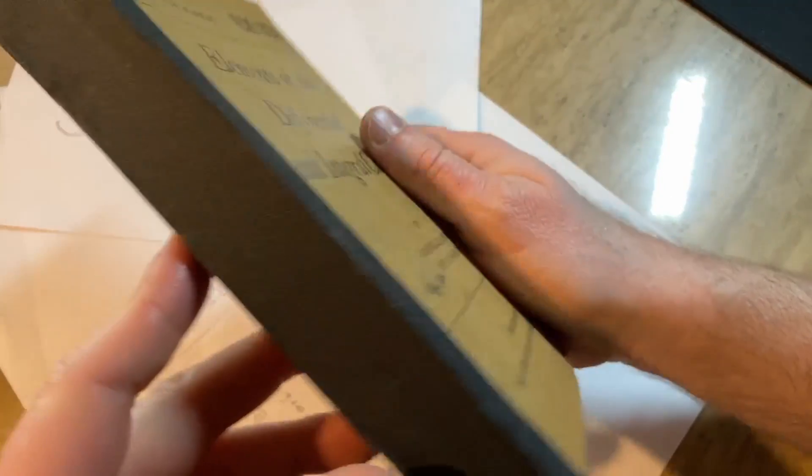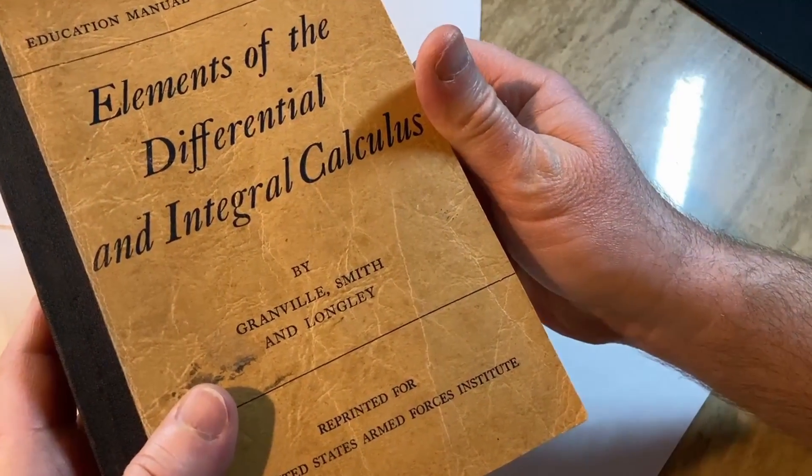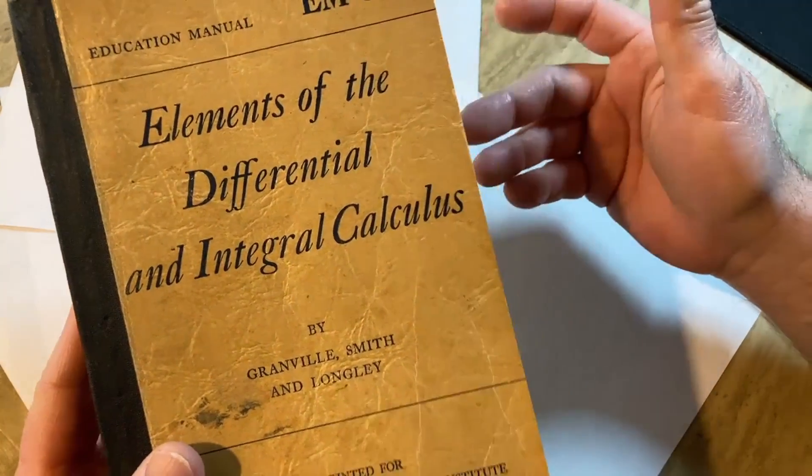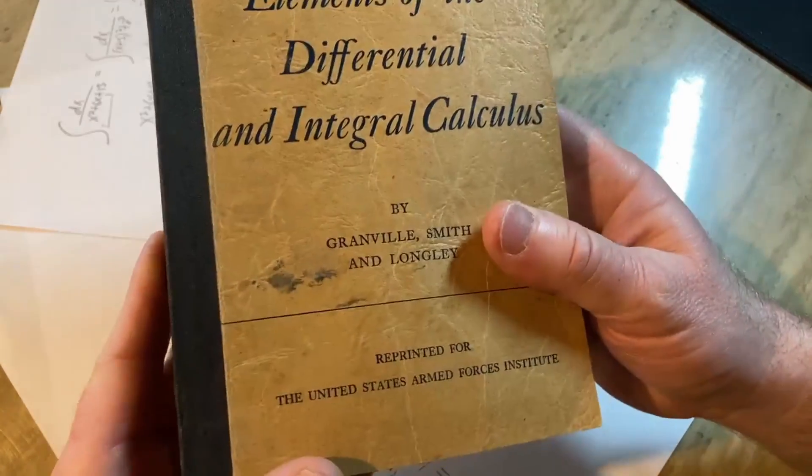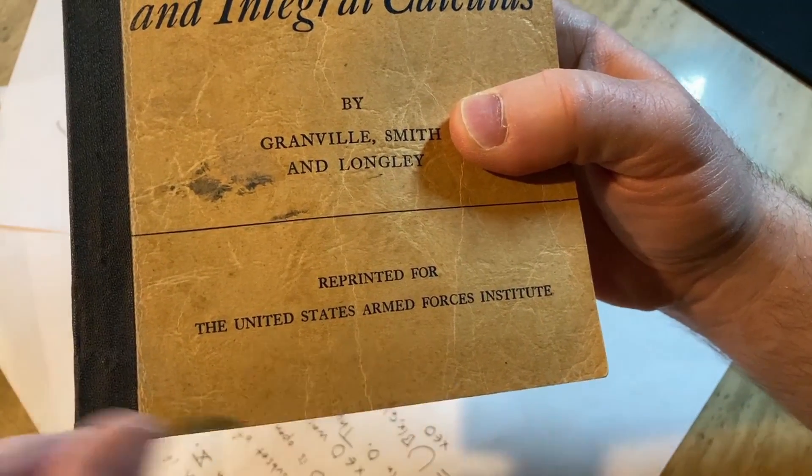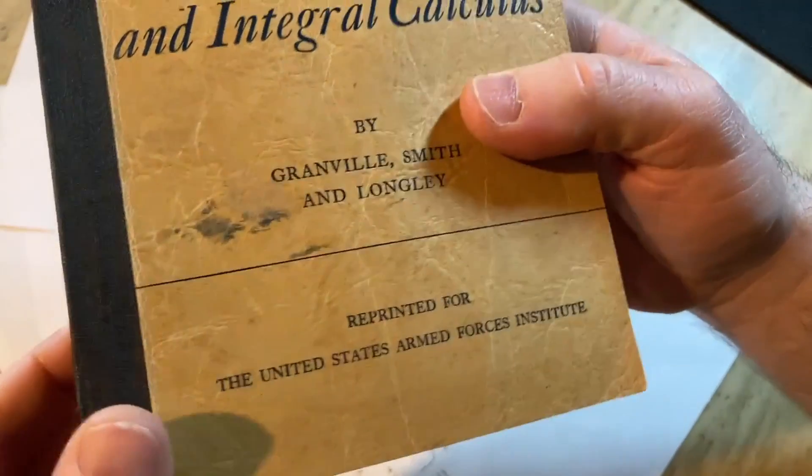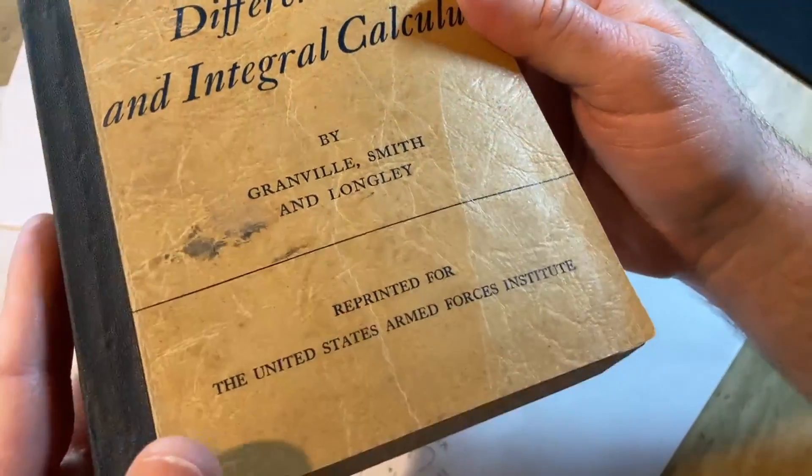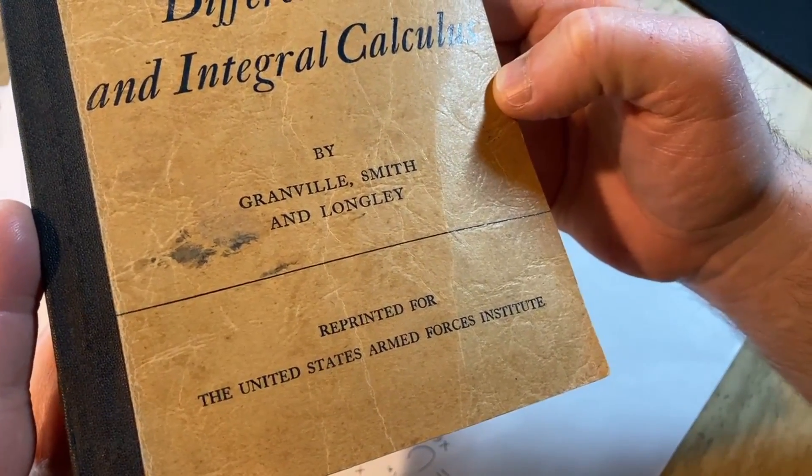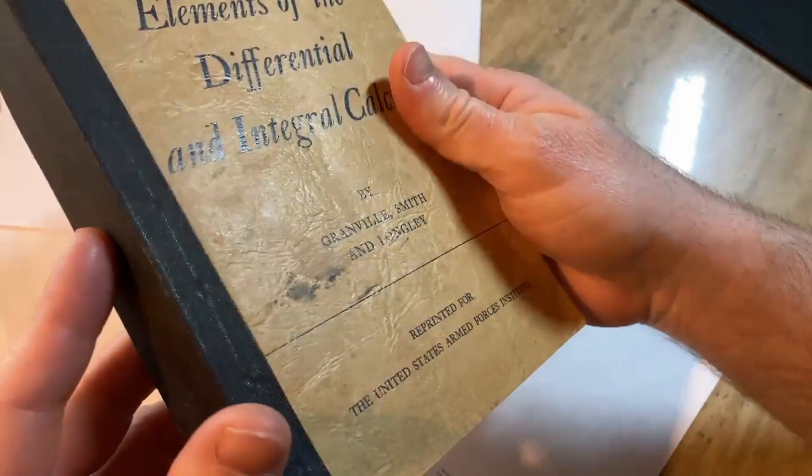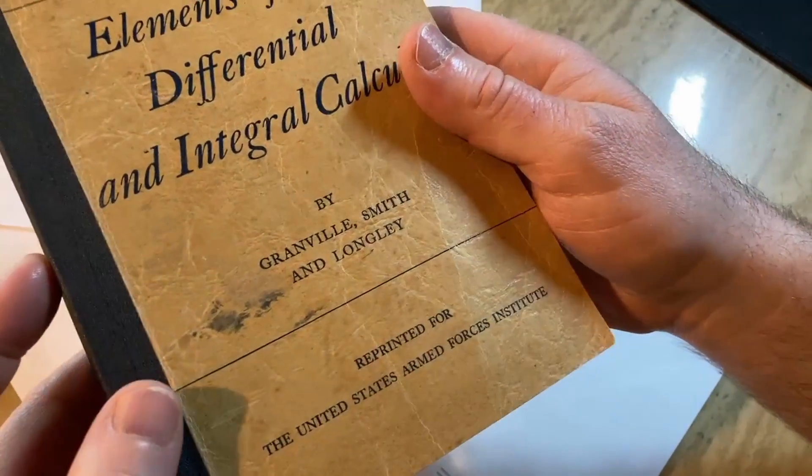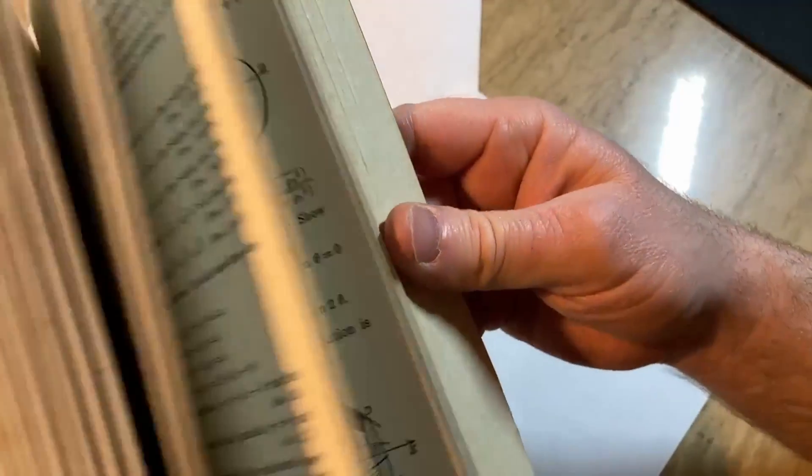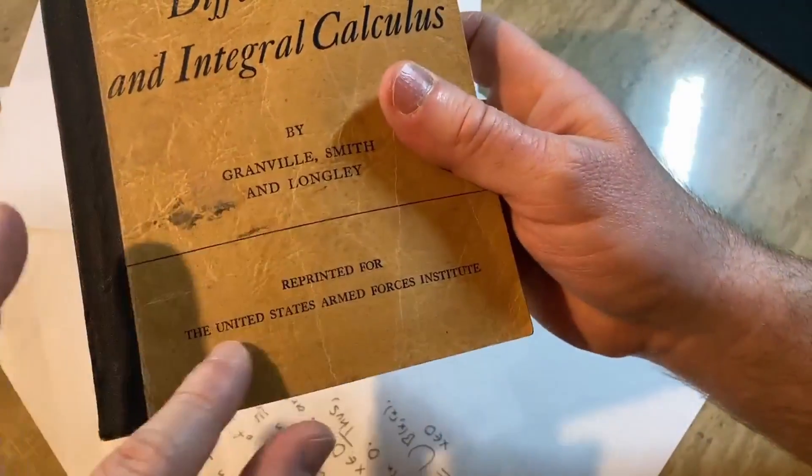This book was used for the United States Armed Forces Institute and it's a calculus book. This is actually a book that was used to either teach people who were in the army calculus or maybe prepare people for the army. All I know is that the United States Armed Forces Institute does not exist anymore. It was an educational organization that was part of the United States Armed Forces. It was founded in 1942 as the Army Institute but it is no more.